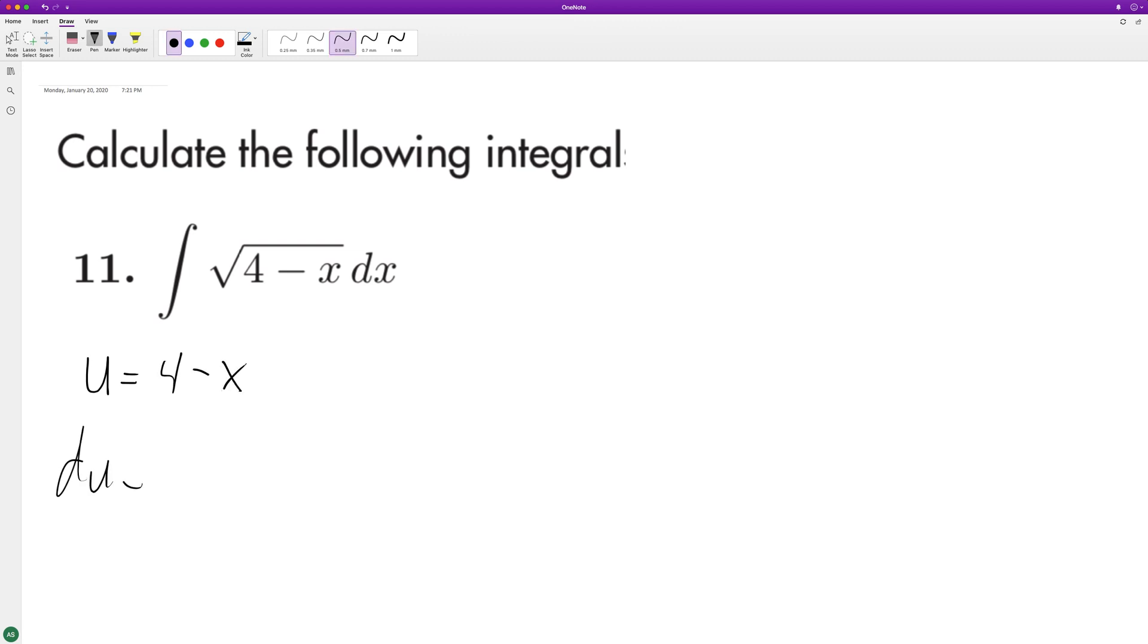and du is equal to negative 1. So to get du equal to dx, you see there's no negative value here, so we need to multiply it by negative 1.